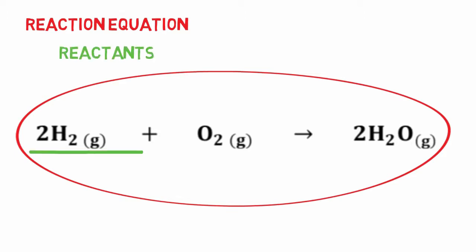The reactants are materials consumed in a chemical reaction and products are materials produced in a chemical reaction. For the formation of water, hydrogen and oxygen gas are the reactants and water is the product.